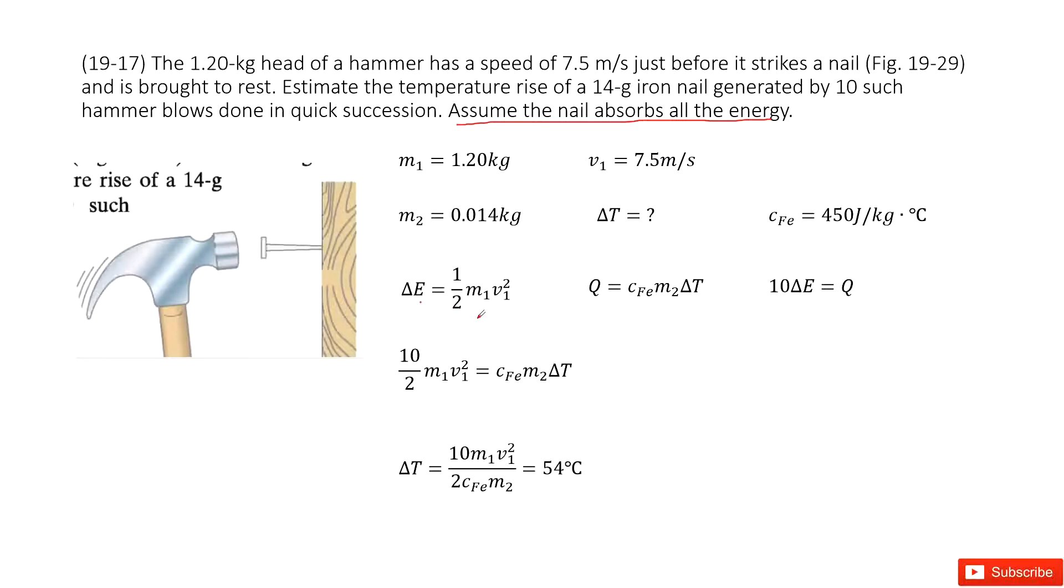Now the heat by the hammer. So we can see for one heat, for one part is just the specific heat for iron times the mass times ΔT. We don't know, we need to find it.